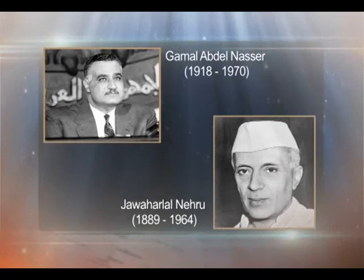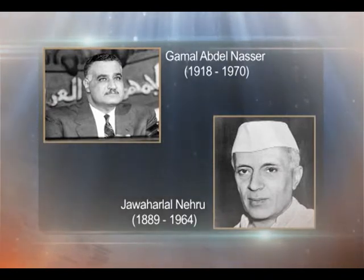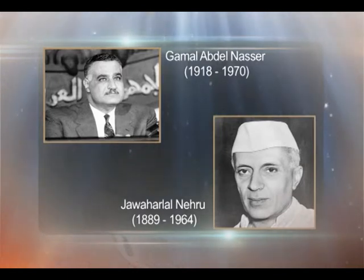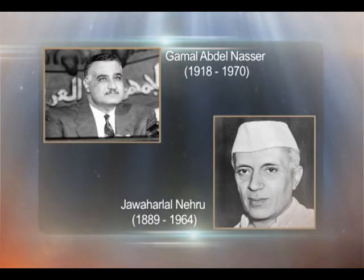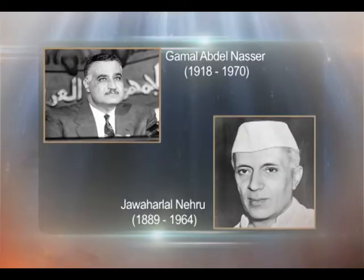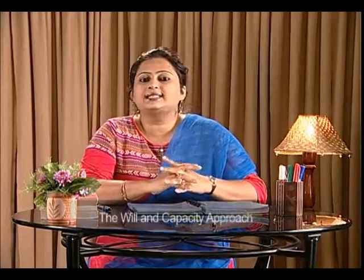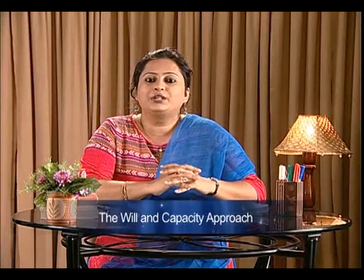We have seen political decay hamper the existence of many third world countries — there are countries which have been termed as fragile, almost on the verge of ceasing to be states. Samuel P. Huntington talks about two leaders: Nasser of Egypt and Jawaharlal Nehru of India as possessing both the will and the capacity to revert the process of political decay into a process of political development in their respective countries. This approach has been known as the will and capacity approach, and most definitely, this approach alone can perhaps save many third world states from collapsing.